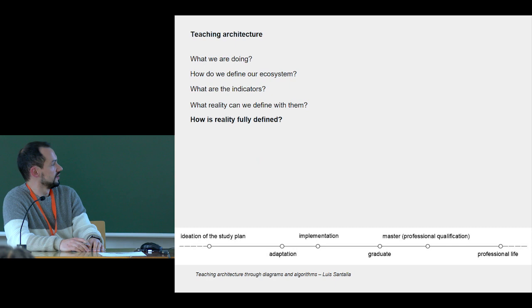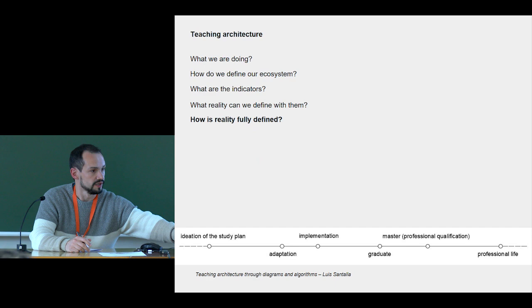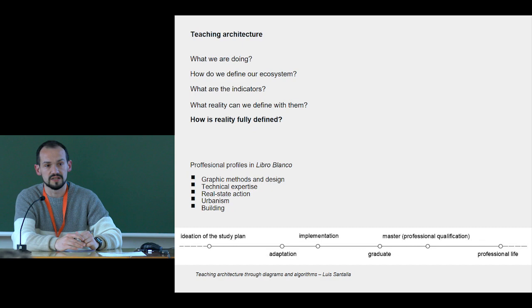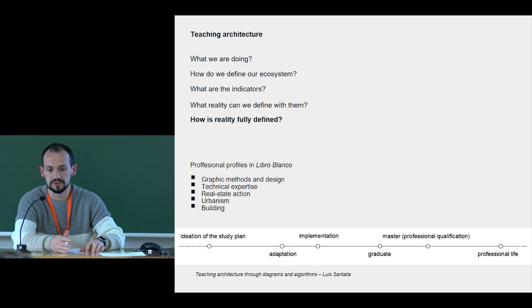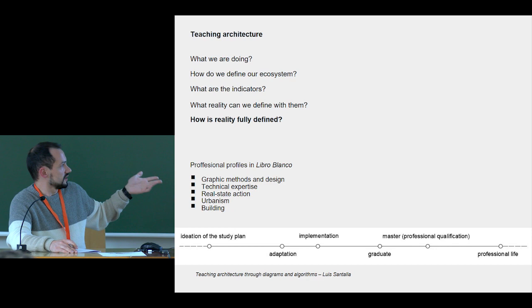So if we start with the timeline, we are going to add more dimensions. Now we only have this line, the timeline, and we are going to put more layers in this line. One of these is the professional profiles we have in the Libro Blanco. It's a Spanish publication about how the title must be, the curricula must be, and we have these five profiles: graphic methods, technical expertise, real estate action, urbanism, and building.